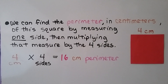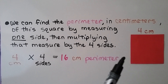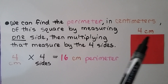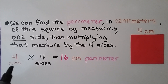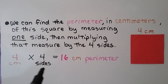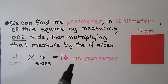We can find the perimeter in centimeters of a square by measuring one side, then multiplying that measure by the four sides. A square has four equal sides, so if we know the measure of one side we know all the sides. We can do 4 centimeters times 4 sides, which equals a 16 centimeter perimeter.